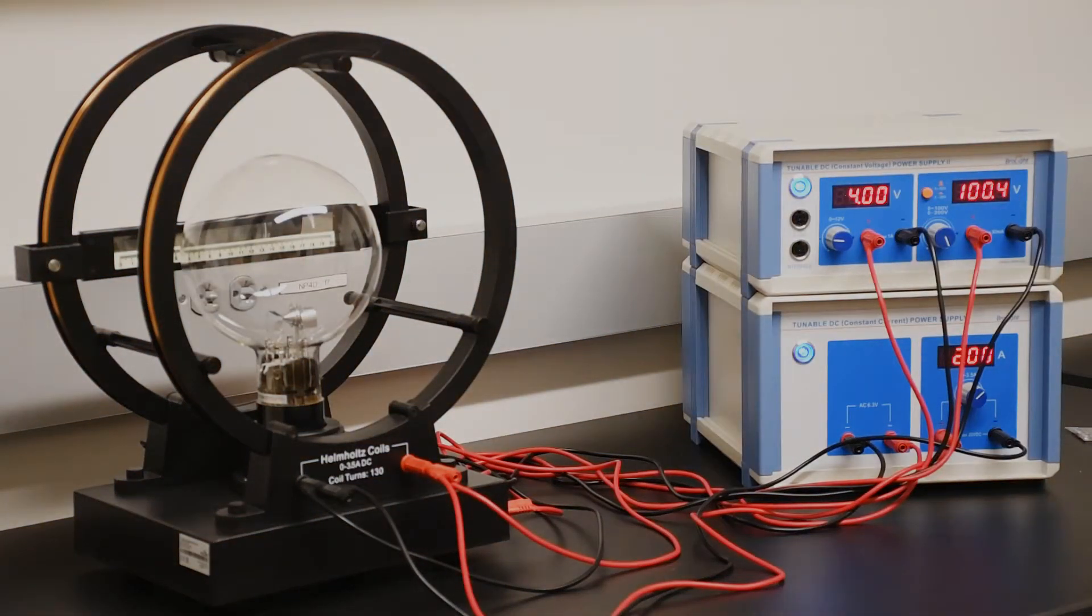So next we'll take a closer look at the Helmholtz coils, and then take some very precisely defined voltages and currents, and let you measure the path inside the tube.